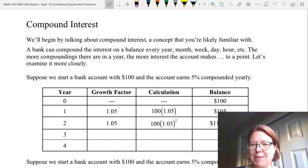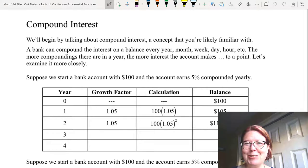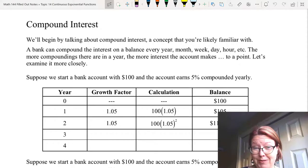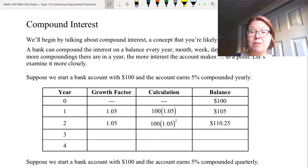We're going to use simple amounts in order to make the calculations a little bit easier. So we're going to start a bank account with $100 and the account is going to earn 5% compounded yearly. We have a table with four columns: the year, the growth factor, the calculation and the balance. We're going to look at years zero, one, two, three, and four and calculate the balance for those four years.